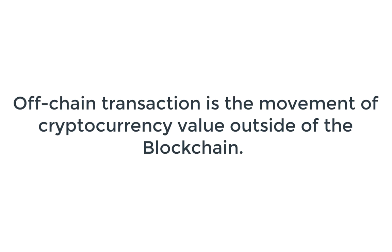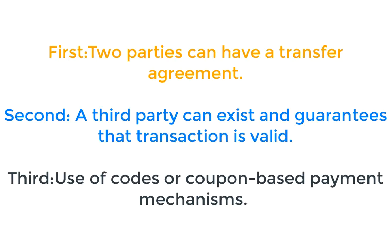On the other hand, off-chain transaction is the movement of value outside of the blockchain and relies on other methods to record and validate. First, two parties can have a transfer agreement. Second, a third party might exist who guarantees that the transaction is complete and valid, for example like PayPal.